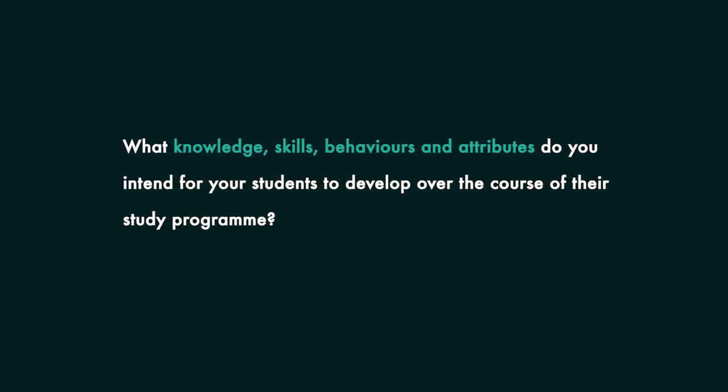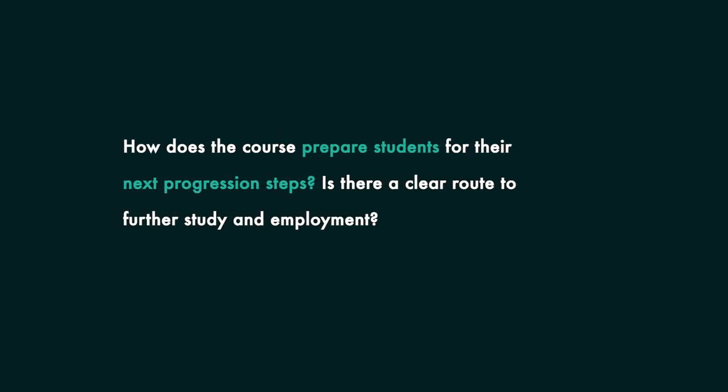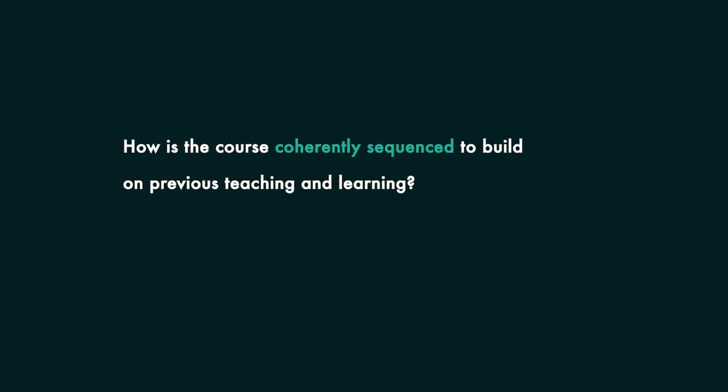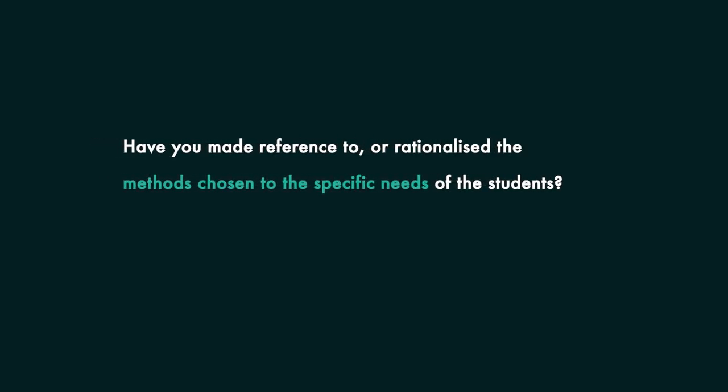What knowledge, skills, behaviours and attributes do you intend for your students to develop over the course of their study programme? How does the course prepare students for their next progression steps? Is there a clear route to further study and employment? How does the course enable encounters with employers and how do you develop your students' work-ready skills and attributes? How is the course coherently sequenced to build on previous teaching and learning? Have you made reference to or rationalised the methods chosen to the specific needs of the students? It's likely that you will add or amend to this later on in the academic year, as you get to know your students better.